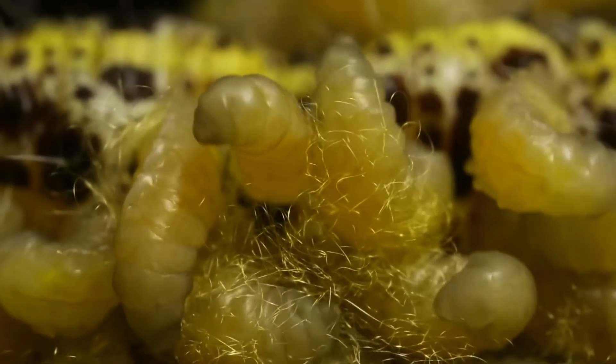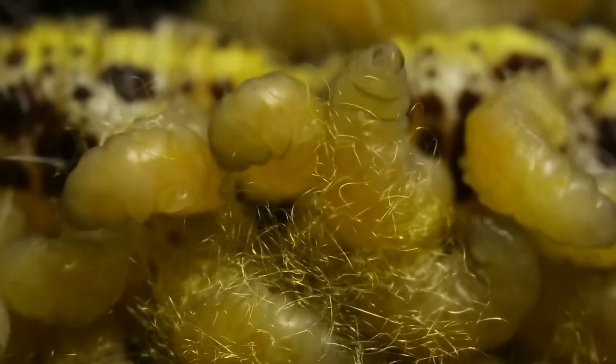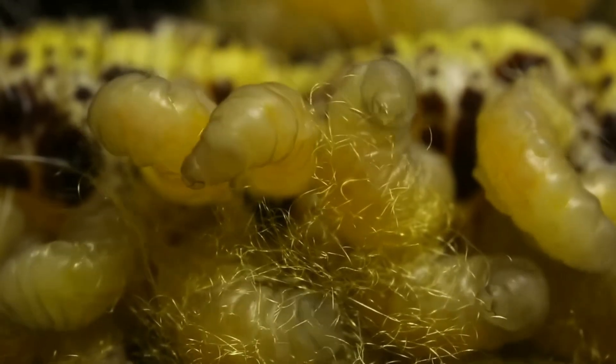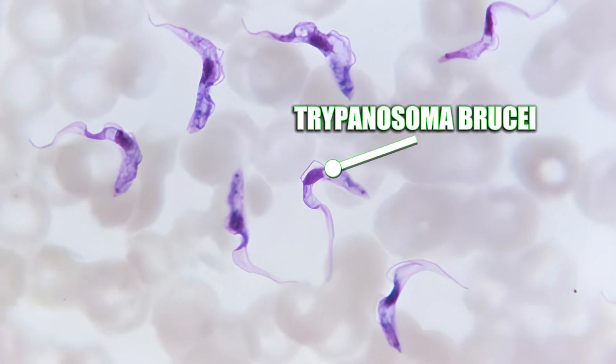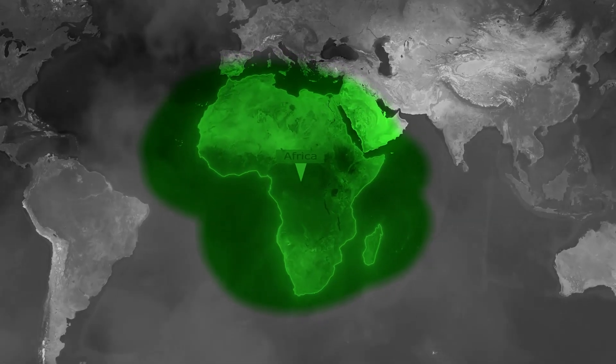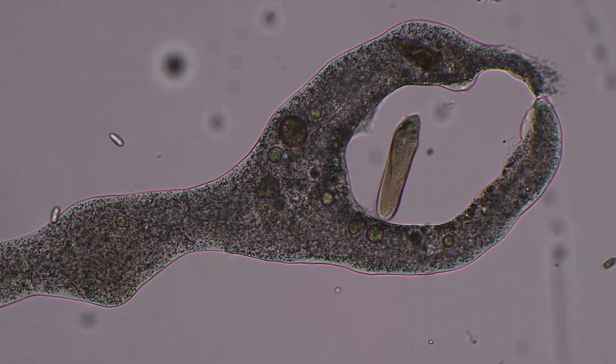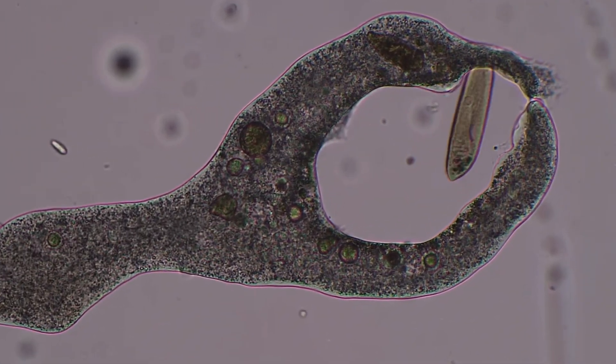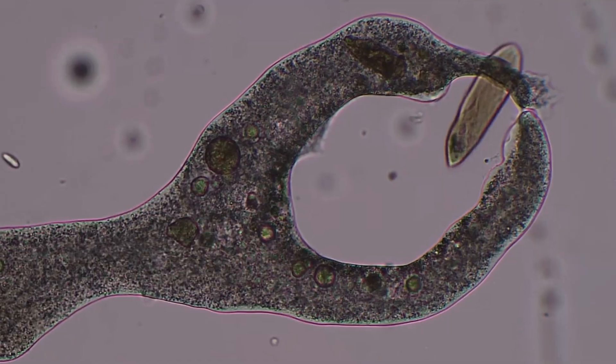And as time passed, parasites began working on a deeper level, even inside the host's biology. One of the best examples is Trypanosoma brucei, a parasite that still infects people today in parts of Africa. Normally, our immune system would detect an infiltrator and try to fight it, but this parasite has a clever little trick.